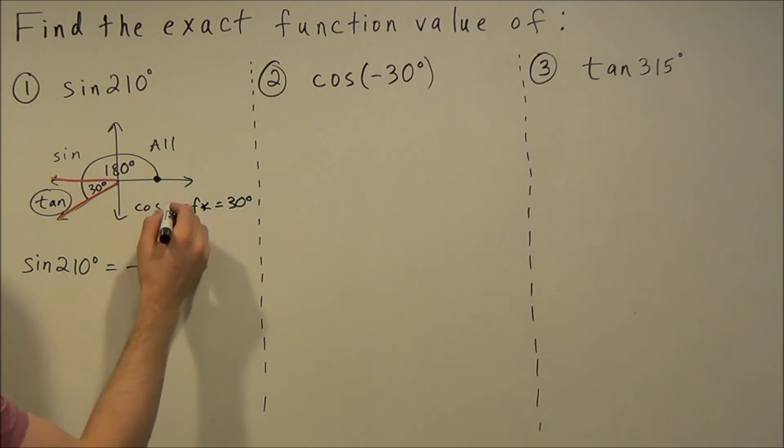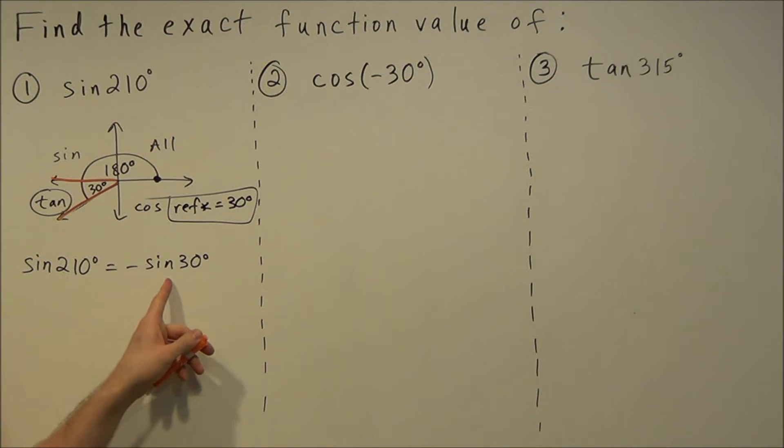The way we use it, once we identify the reference angle, we could rewrite the original function in terms of its reference angle. Remember in quadrant three we said sine is negative, so we put a negative in front of the sine function and we're going to replace 210 now with the reference angle of 30 degrees.